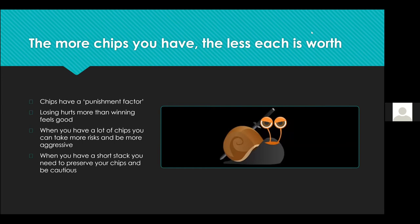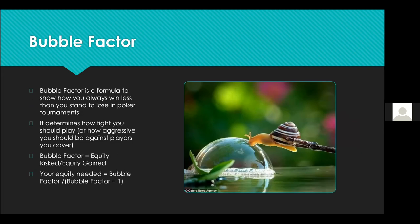The more chips you have, the less each one is worth — that's the punishment factor. What this means strategically wherever ICM is a major factor is that losing hurts more than winning feels good. When you have a lot of chips you can take more risks and be more aggressive because you're risking less in monetary terms. When you're short-stacked, your main strategic incentive is to preserve your chips and be cautious.